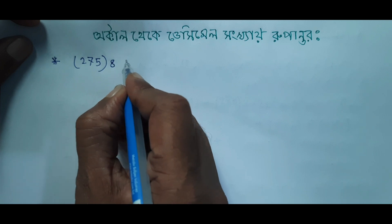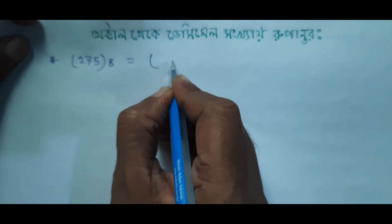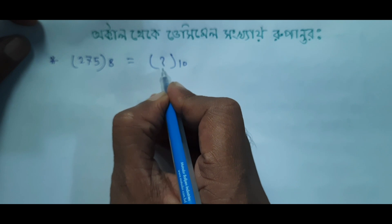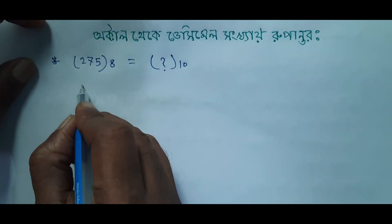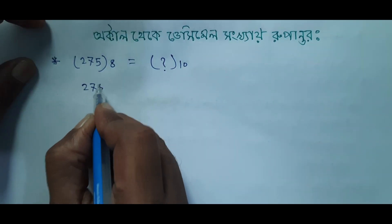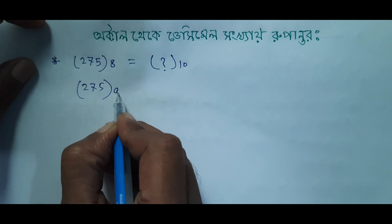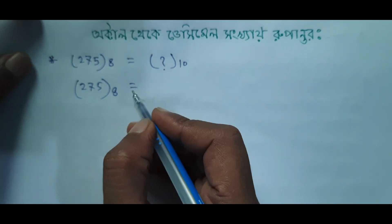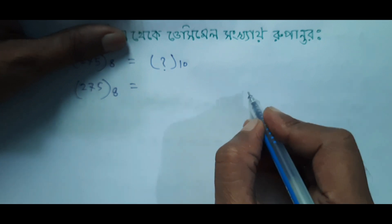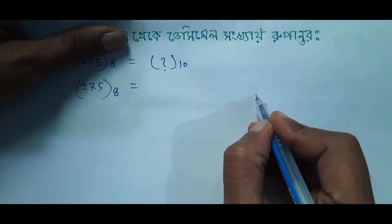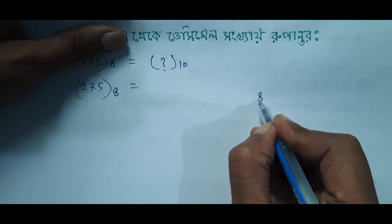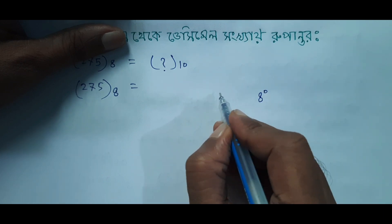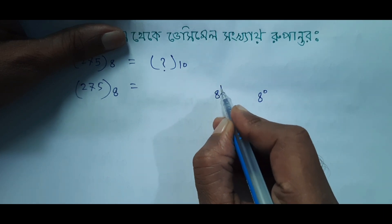This decimal — what is the decimal value? 2, 7, 5. This is the decimal. So let's write: 1, 8, 2, 0. Then 2, 1.